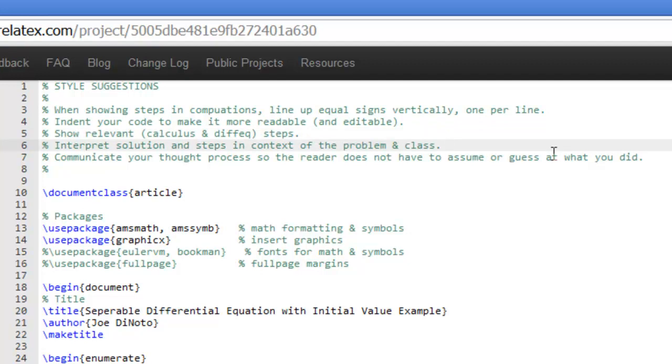And then you want to interpret your solutions and your steps in the context of the problem that you're working on and the class that you're working in. So in other words, you want to talk about why the bounds are where they are, or what this particular graph actually means in terms of the particular problem. Say if there are units involved, like time and money, when you interpret which axis is which and so on.